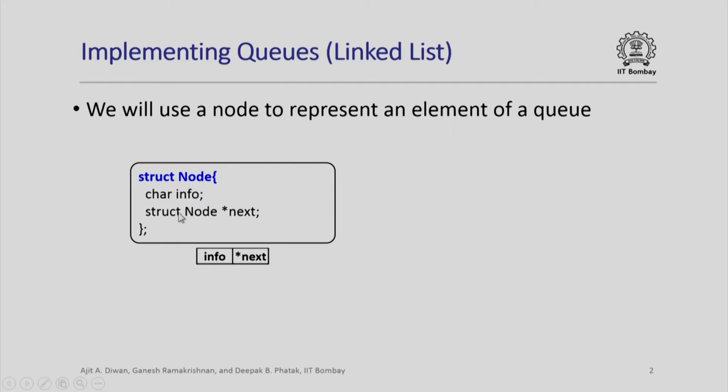We will use a node to represent an element of the queue. The structure of the node is very simple - it will contain information and will contain a pointer to some other node. We shall see how the pointers are used.